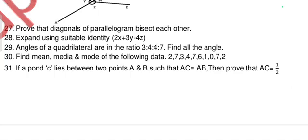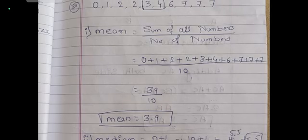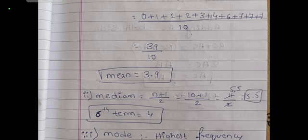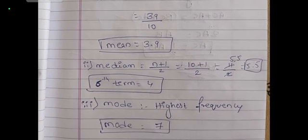Question 30: find the mean, median, and mode of the following data. Arrange the data in ascending order. Mean = sum of all numbers divided by count of numbers. The sum is 39 and there are 10 numbers, so mean = 39/10 = 3.9. For median, use (n+1)/2 = 11/2 = 5.5, so take the average around the 5th and 6th term — the 6th term is 4, so median = 4. For mode, the number 7 is repeated 3 times, so mode = 7.